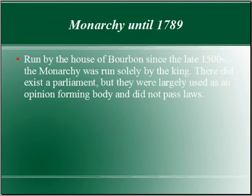A loose example: in my first box, the monarchy lasted until 1789. It was run by the House of Bourbon since the late 1500s. The monarchy was run solely by the king. There did exist a parliament, but they were largely used as an opinion-forming body and did not pass laws. I would also need to include why it fell — that has a lot to do with Louis XVI and Marie Antoinette, serious amounts of debt, extravagance by the monarchy, dissatisfaction, starvation, and taxes from the lower class, which made up about 80 to 90 percent of the population.